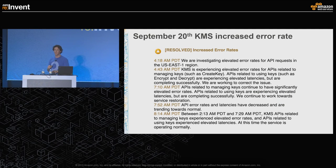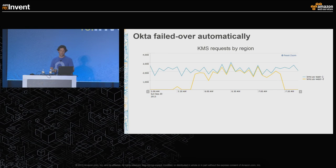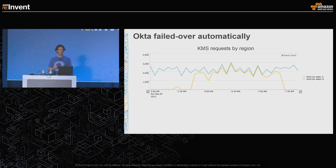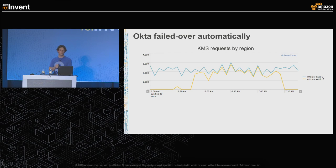So how did this actually work in practice? On September 20th, KMS had a heightened error rate for about two hours. Looking at the graph of requests from our service out to KMS, around 5:30 we started to see a heightened error rate and then around 5:45 it got pretty high. What you see is that our service is continually making requests to the US East region, but now we're also going out to the US West region — those requests are succeeding and we're then able to decrypt our data. Our operations team didn't even get paged or woken up and we continued operating.